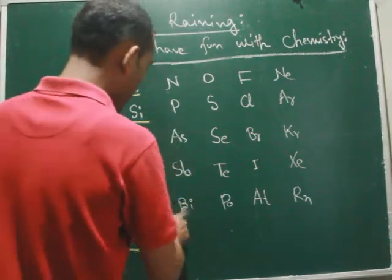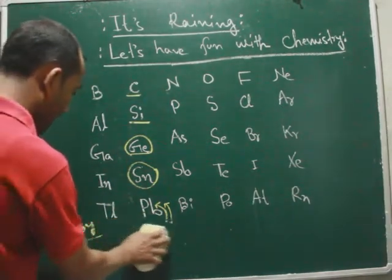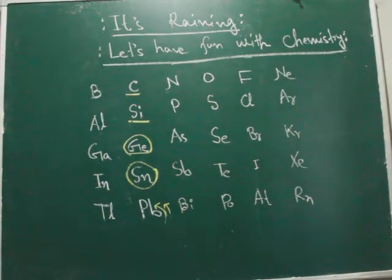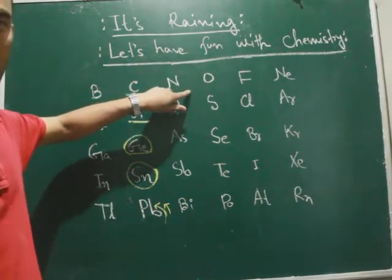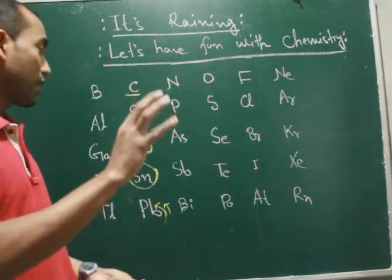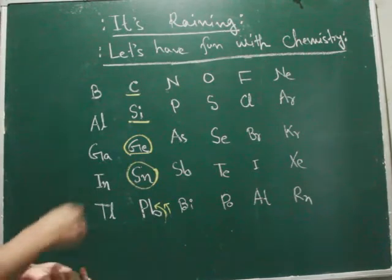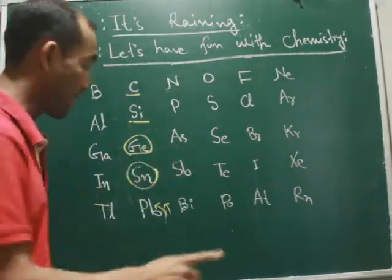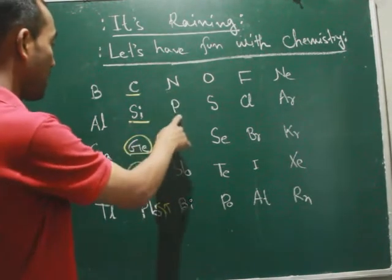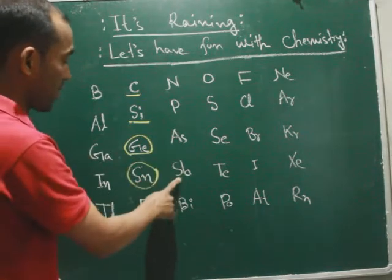Next. Group 15: I have Nitrogen, Phosphorus, Arsenic, Antimony, and Bismuth. So you have a friend whose name is Nagan — 'Nagan passed.' N for Nitrogen, P for Phosphorus, A for Arsenic, S for Antimony — Antimony's symbol is SB. So: Nitrogen, Phosphorus, Arsenic, Antimony, Bismuth. Nagan passed.